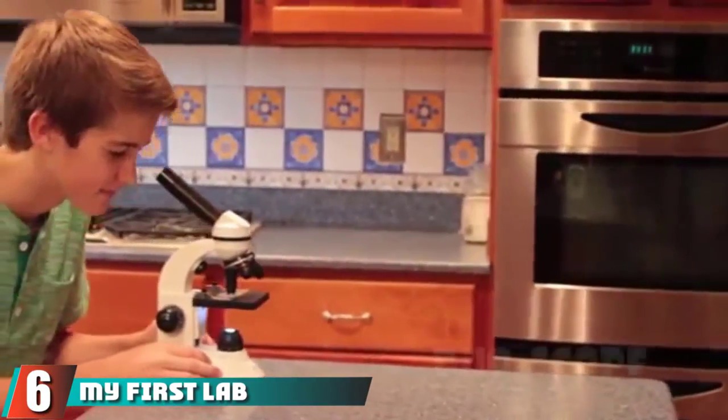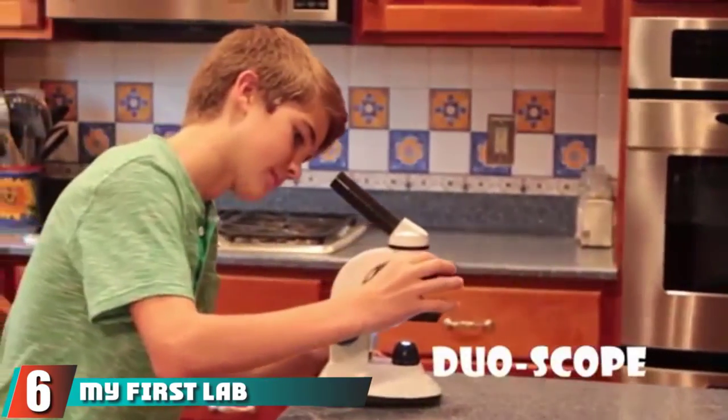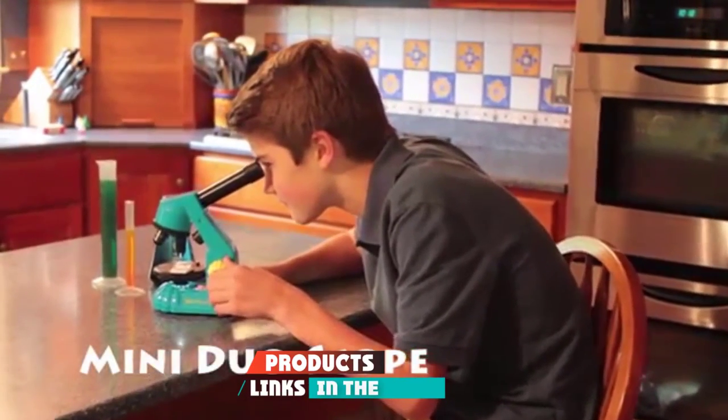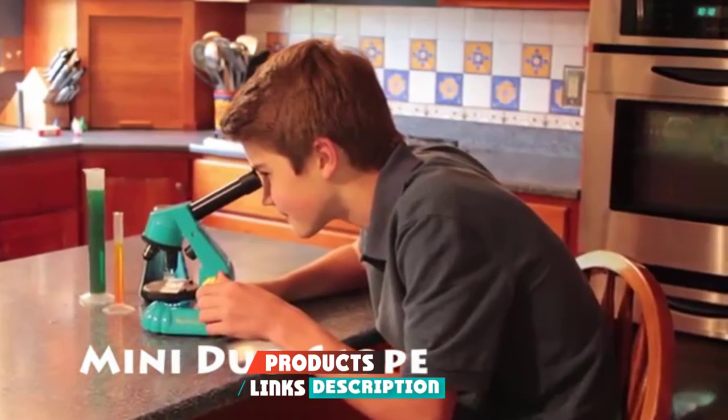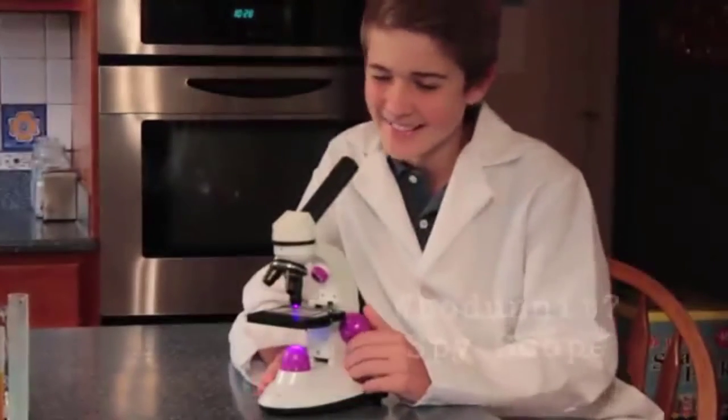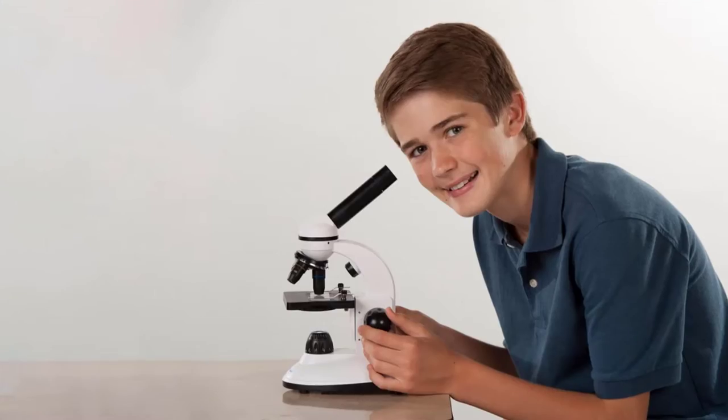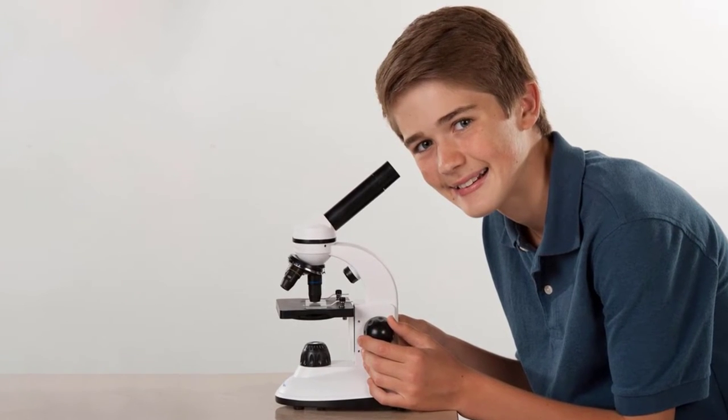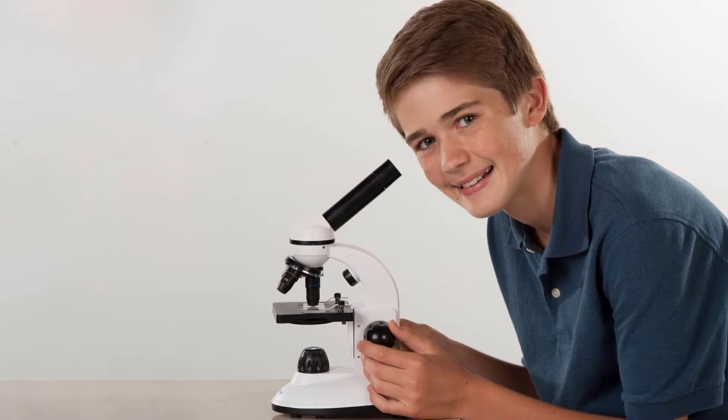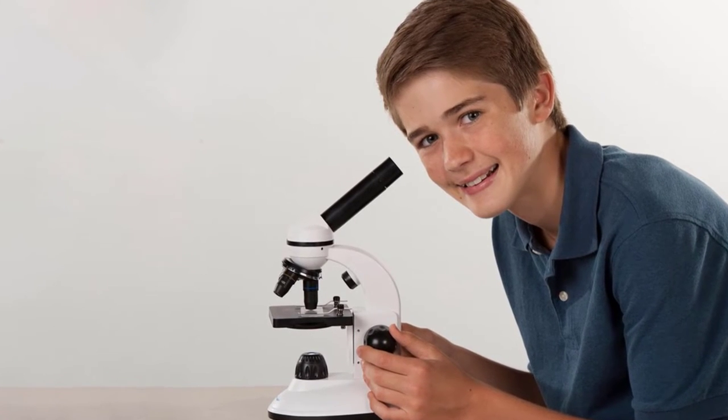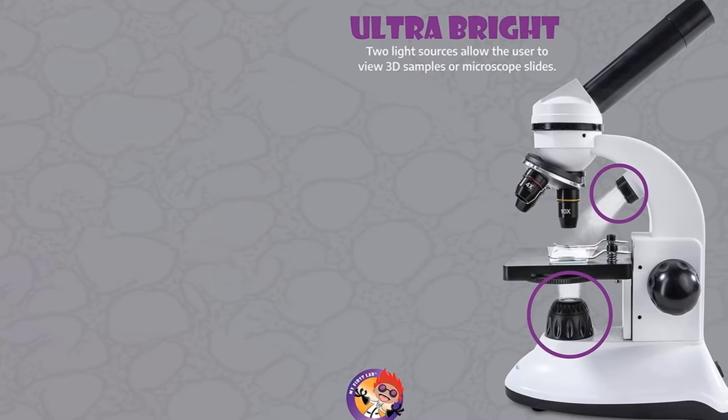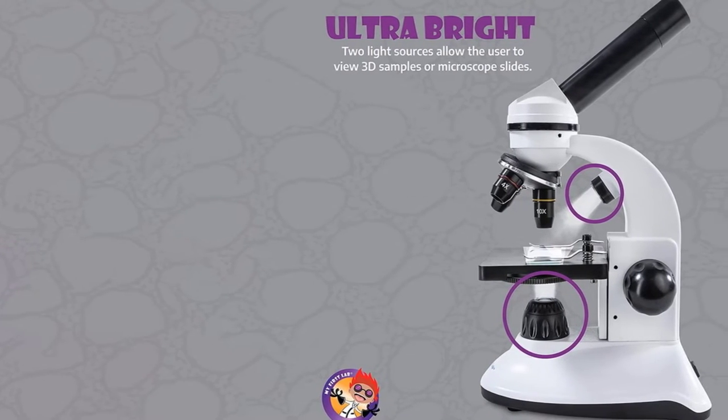The number six position is dominated by My First Lab Duo Scope Microscope. Some suggest that this is one of the best microscopes for kids, thanks to its usability. It is possible that middle schoolers may still use this device all the way through college. My First Labs' rendition received a positive microscope review for its professional scientific feel, as it can act as both a compound or stereo microscope, which makes it a versatile choice. Build-wise, it is made of plastic, which might not be the best in durability.